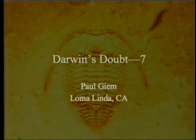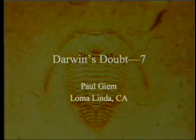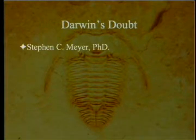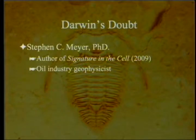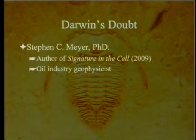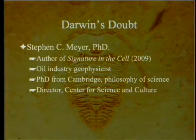Darwin's Doubt, Part 7. This time, because of time constraints and an odd number of chapters, I'm going to go over only one chapter — probably the one most worthwhile going over by itself. Darwin's Doubt is written by Steve Meyer, author of Signature in the Cell, formerly an oil industry geophysicist who obtained his PhD from Cambridge in the philosophy of science. He has become the director for the Center of Science and Culture at the Discovery Institute.